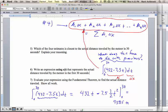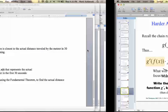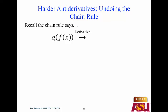Let's do a couple examples of antiderivatives and we'll see if there's one we can do from the homework. We're going to call this 'undoing the chain rule.' Recall the chain rule says that if you have a composite function — one function plugged into another — if it's g of f of x, then the derivative is g prime of f of x times f prime of x. That's our derivative.